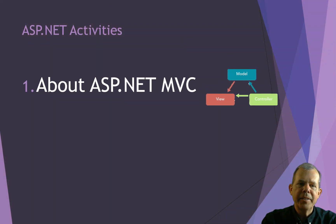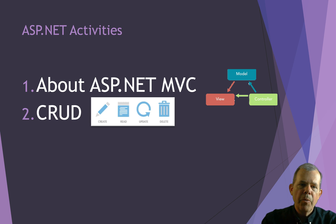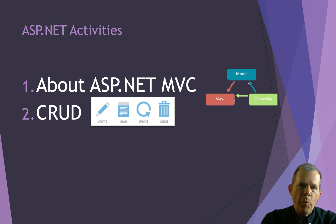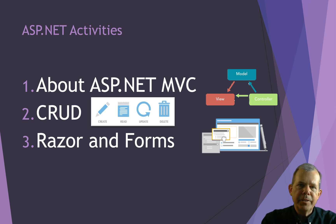Here are some of the activities that are ahead. First of all, we're going to learn about what ASP.NET MVC is. This is C Sharp — Microsoft's version of making a web server and making web applications. We're going to learn the basic CRUD application activities, which are create, read, update, and delete. So forms, web pages, and databases is what this is all about. We're also going to work with the language called Razor. Razor is a blend of C Sharp and HTML.